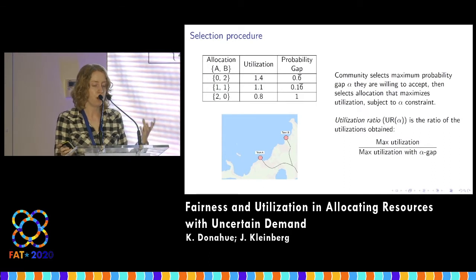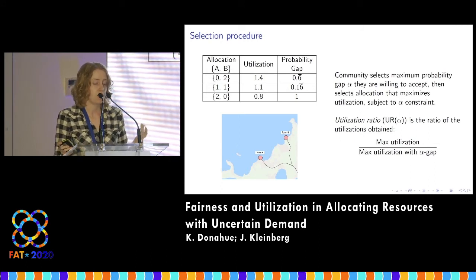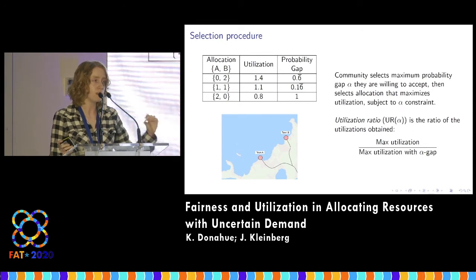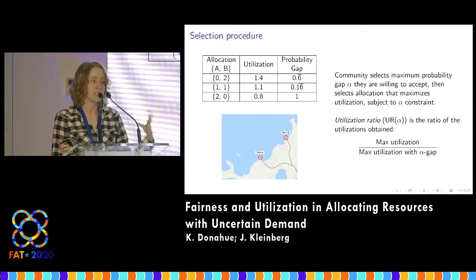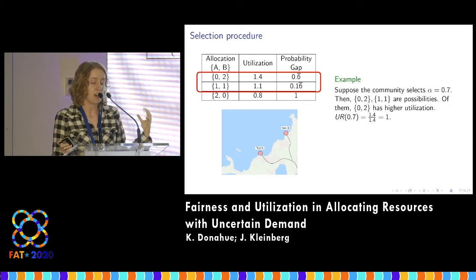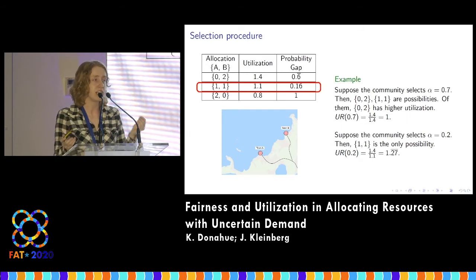We have two objectives that tell us different things — how do we reconcile them? We assume the following procedure: the community selects a maximum probability gap alpha they're willing to accept, then selects the allocation that maximizes utilization subject to this constraint. The utilization ratio is the ratio of unconstrained maximum utilization to constrained maximum utilization. A ratio of one means the fairness constraint does nothing; a larger ratio indicates greater tension between the two objectives. For example, with alpha equal to 0.7, two allocations satisfy the constraint and the one with higher utilization is selected — the ratio is one. With alpha equal to 0.2, only one allocation satisfies the constraint, and the utilization ratio is about 1.3, indicating slight tension.